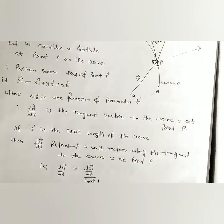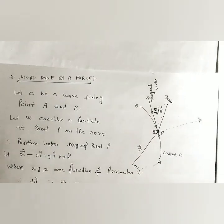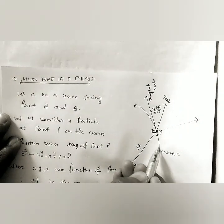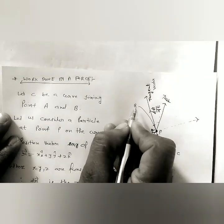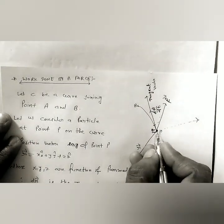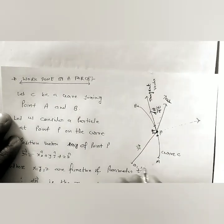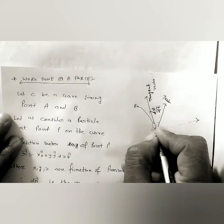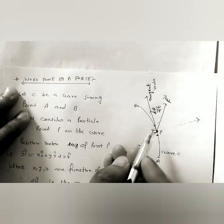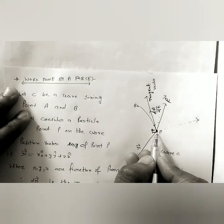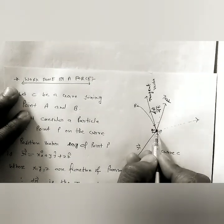Next we discuss the topic of work done by a force. Consider a curve c from point a to point b. At any arbitrary point p on the curve, r vector is the position vector from a fixed origin O, and the tangent vector at p is represented by dr/dt. A force f acts at point p. We want to move a particle along the curve from point a to point b, and the actual work done is the effect of the force along the tangent vector direction.